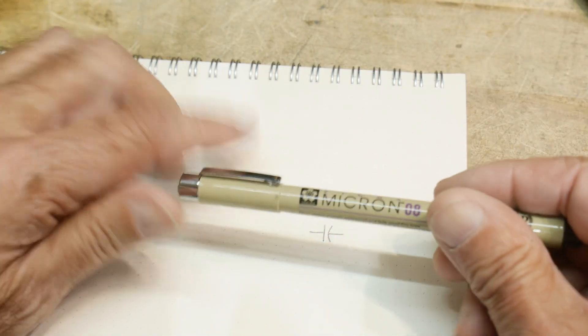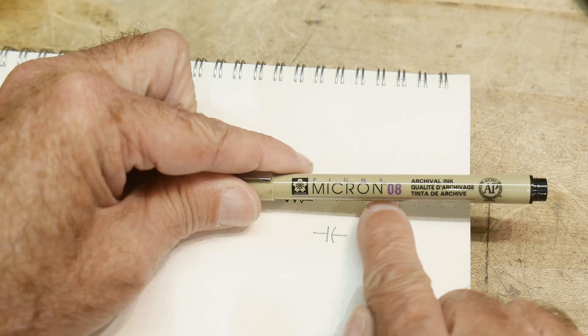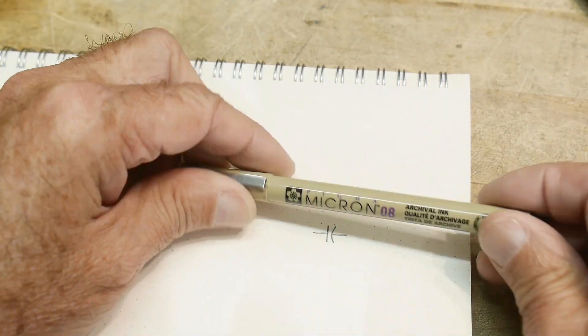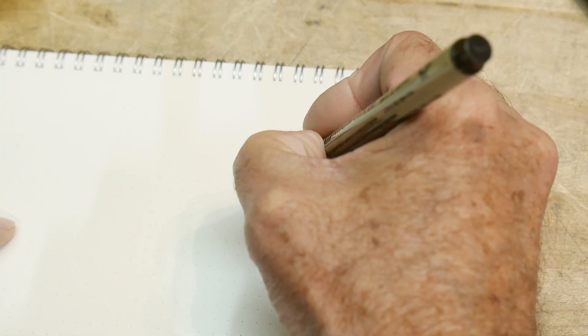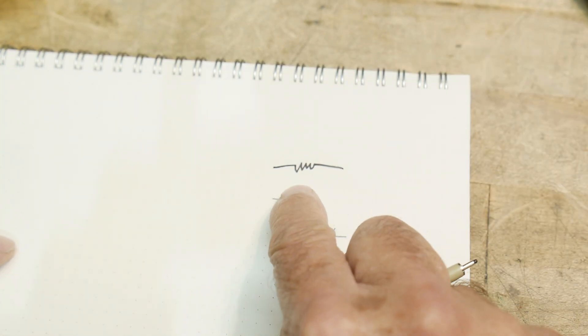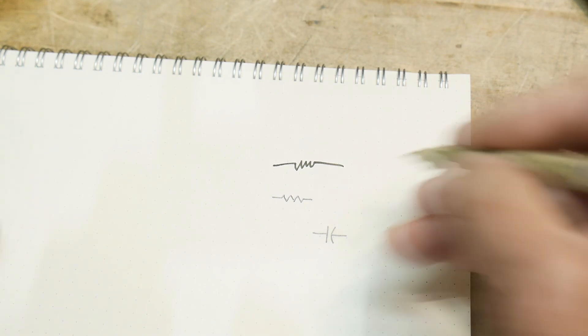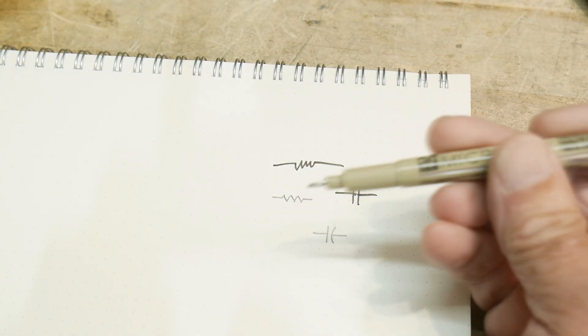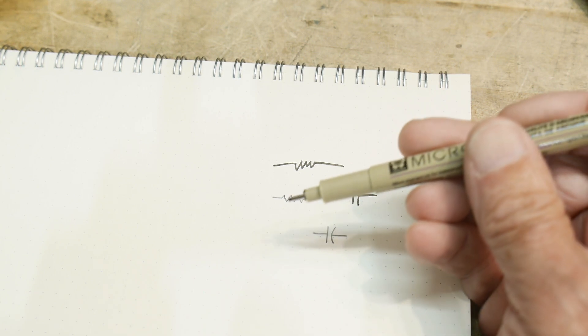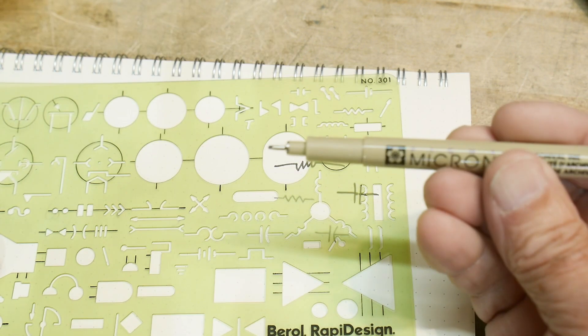What I found when I've been making videos over the last couple of years is I really like these pens. These are Micron pens, and I like the 0.8 millimeter. I think the 0.8 millimeter is a nice fat line, and so I like the width of this pen.